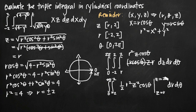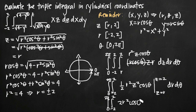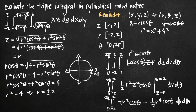Plugging in the upper limit z equals 2: z squared is 4, divided by 2 gives 2 r squared cosine theta. Subtracting the lower limit z equals r: plugging in r for z gives r squared again, so we get minus one half r squared times r squared, which is minus one half r to the fourth cosine theta. This leaves the integral from 0 to 2 pi and negative 2 to positive 2 of the expression 2 r squared cosine theta minus one half r to the fourth cosine theta, dr d theta.